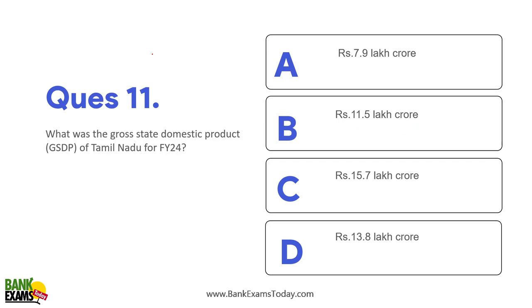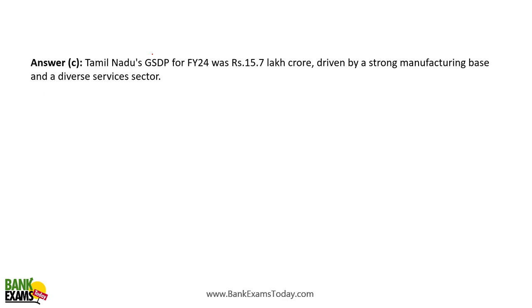What is the Gross State Domestic Product of Tamil Nadu? It is 15.7 lakh crore. Telangana's GDP is growing the fastest at the state level, which is why it is in the news.